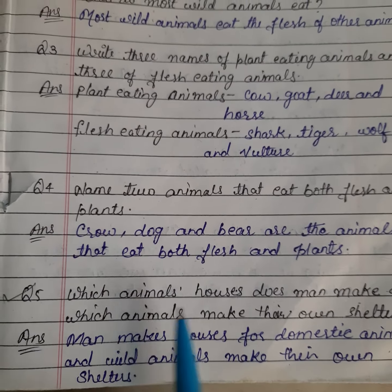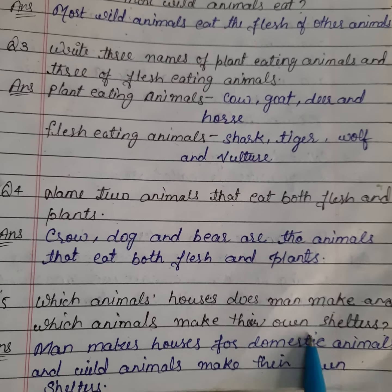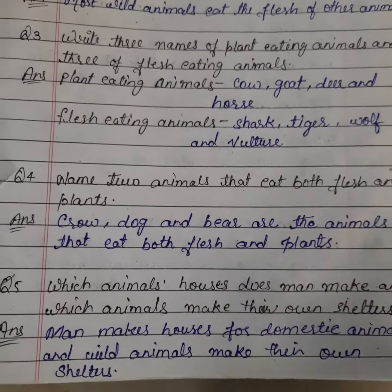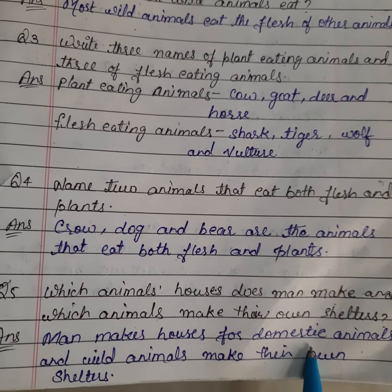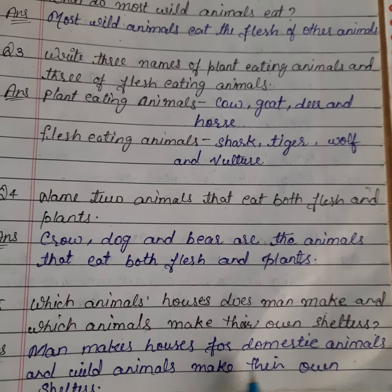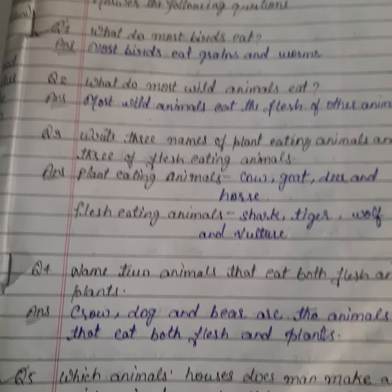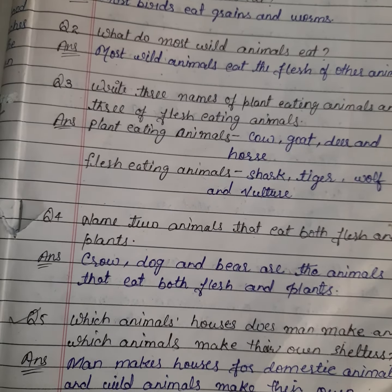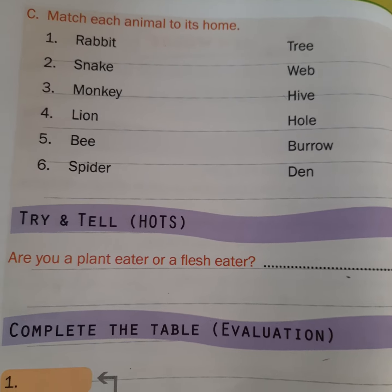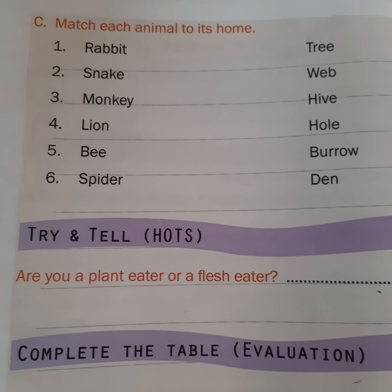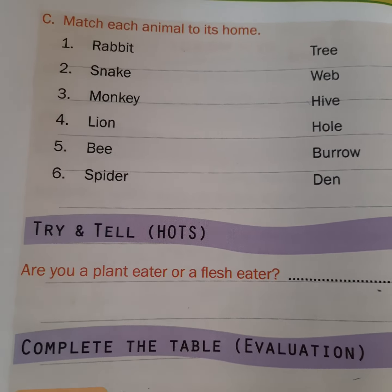The last question is: which animal houses does man make, and which animals make their own shelters? Shelter means the same as house. Man makes houses for domestic animals, and wild animals make their own shelters. Complete this whole activity and exercises, and also complete the matching on page number 44. That is the Exercise C1 you have to complete. Have a nice day!